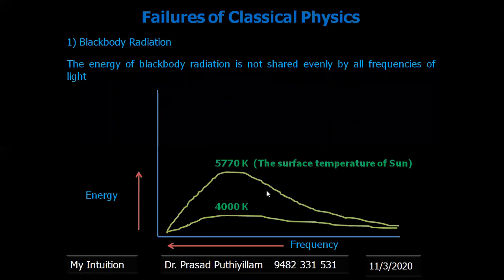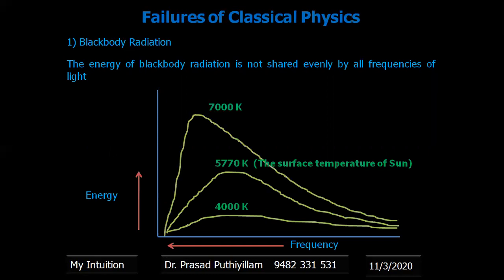On decreasing the frequency at 4000 kelvin, 5770 kelvin which is the surface temperature of sun, as well as around 7000 kelvin, all this shows that there is a deviation from classical physics.